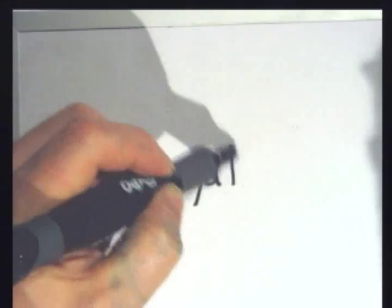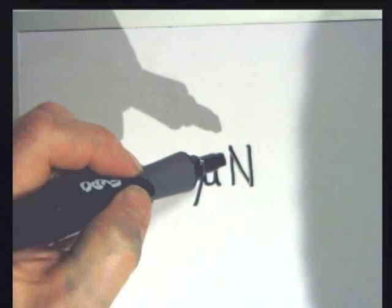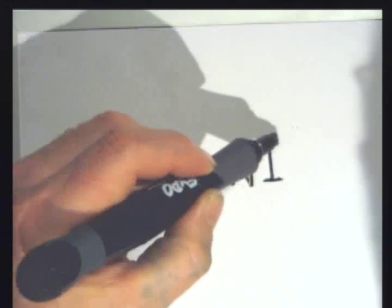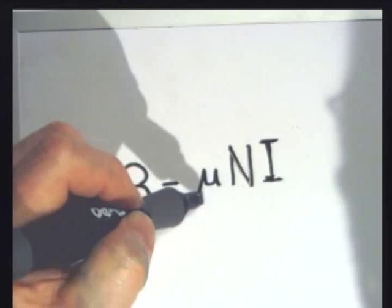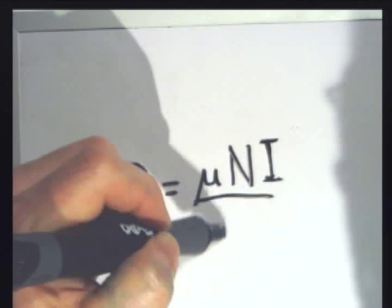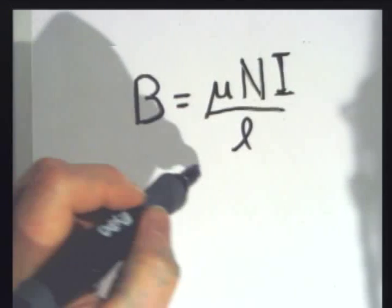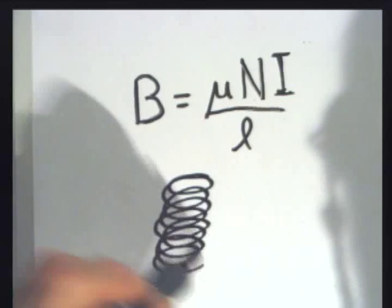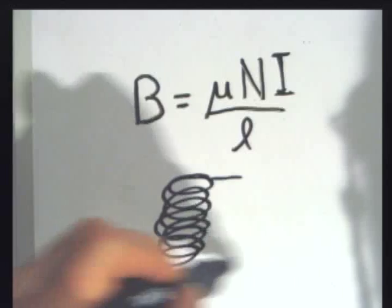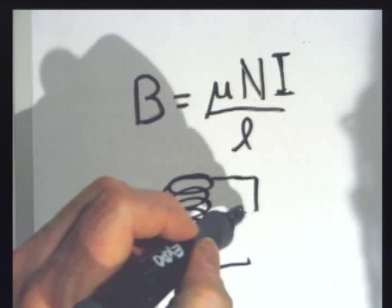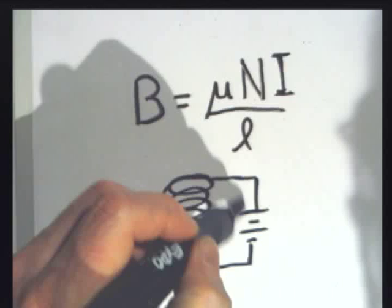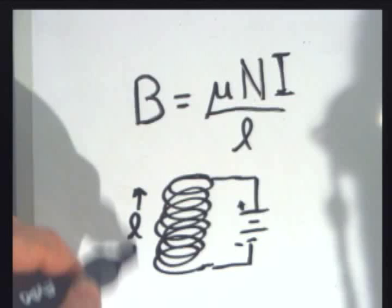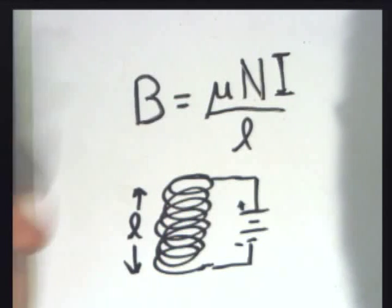Capital N is the number of turns — the more turns you have, the stronger the magnetic field. I is the current; you can increase the current usually by increasing the voltage. And L is the length of the coil. So with a solenoid like this, it's got a certain number of turns, a certain current running through it, connected with a DC circuit, and a certain length. The smaller the length, the bigger the magnetic field.